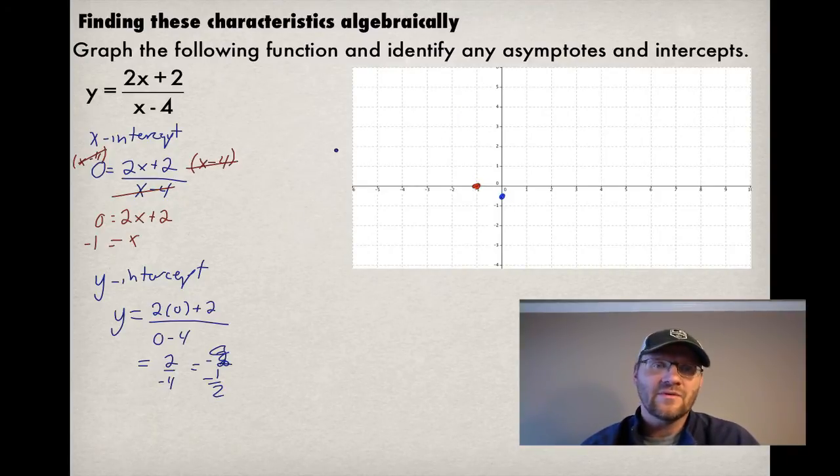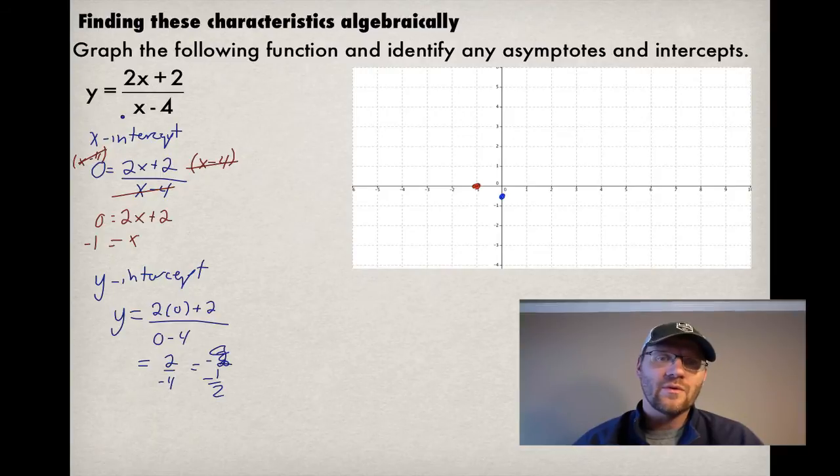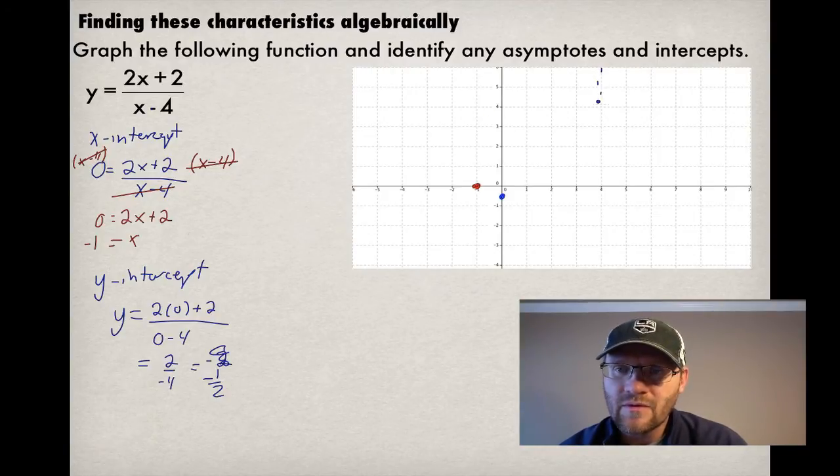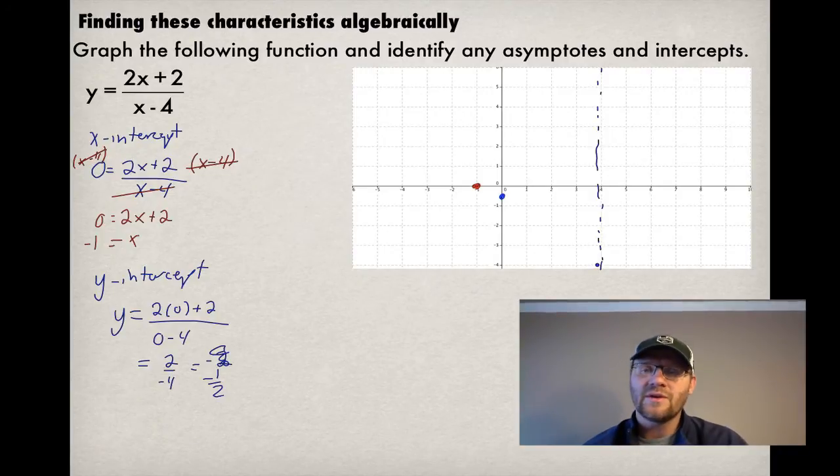We need to find asymptotes as well. So hopefully you realize that the function on the bottom, or the denominator, provides you with your vertical asymptote. And so when it's x minus 4, we know that x, and this is when we're talking about restrictions and things that x cannot be, x cannot equal 4 because then we'd have 0 in the bottom. So that means that our vertical asymptote is at positive 4. So I just draw that with a dotted line.